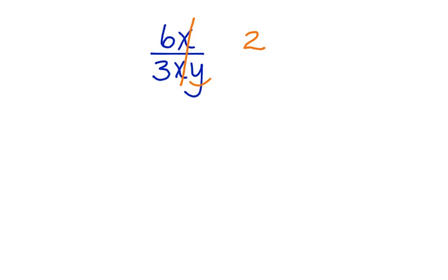x and x cancel, but we're left with y in the denominator. So our answer is 2 over y.